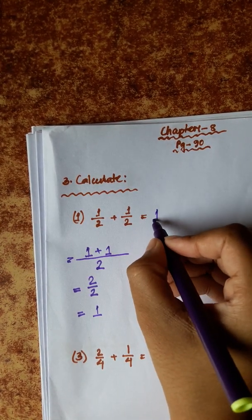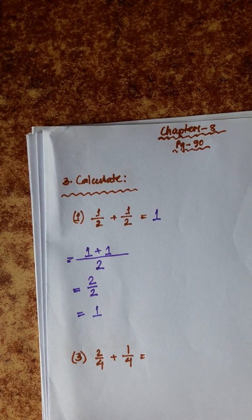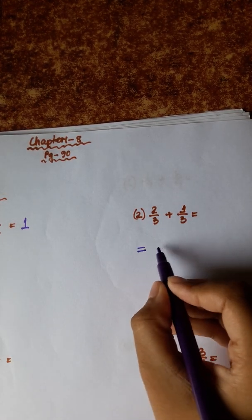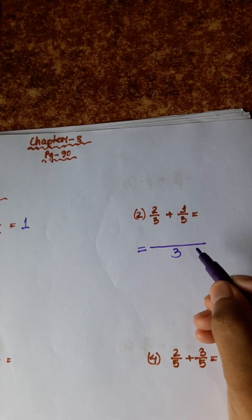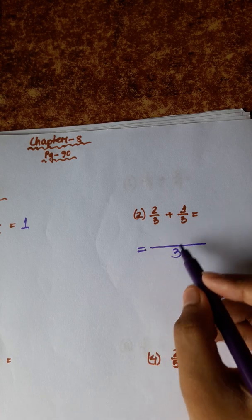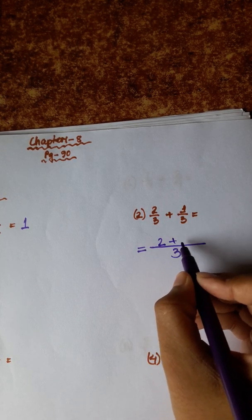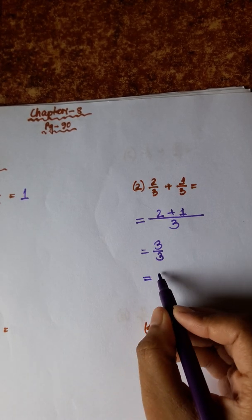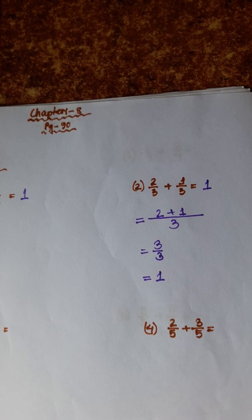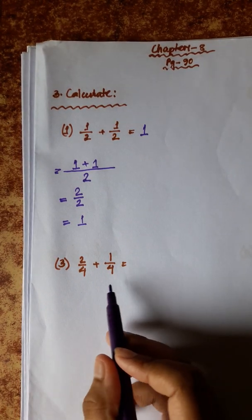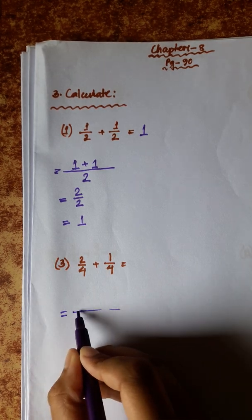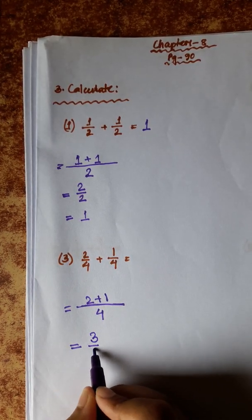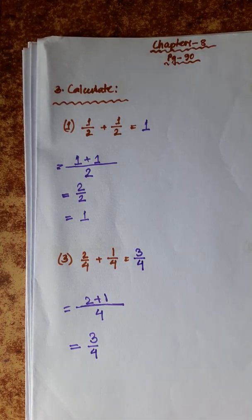The denominator is the same. 3 plus 1 by 3. The denominator is the same, so the denominator is 4. 2 plus 1 equals 3 by 4. So the answer is 3 by 4.